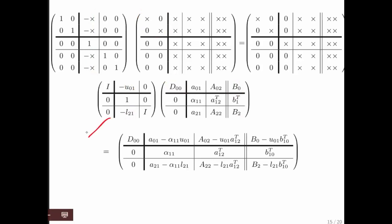And then when we apply this Gauss transform, what we get is this right here. And now what we want to do is choose our U01 and L21 so that we introduce zeros right here and right here.